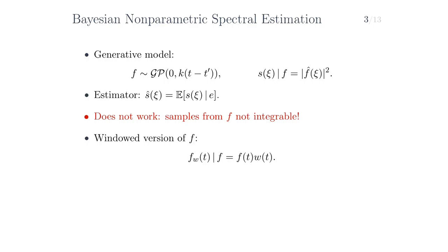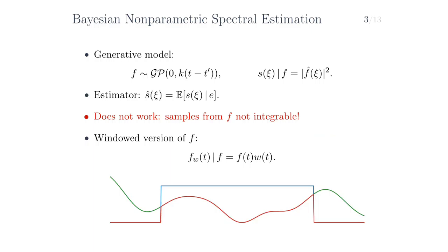Instead, to fix this, we look at a windowed version of f, f_W, which we construct by taking f and multiplying it by a window function W. For example, suppose that a sample of f is given in green, and our window function is simply a rectangular window. Then the product of the two: whereas f might not be integrable because it has support everywhere, the window sets it to zero outside the window. So the resulting windowed version of f, shown in red, clearly is integrable, so we can Fourier transform it.